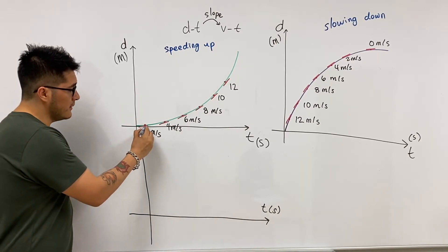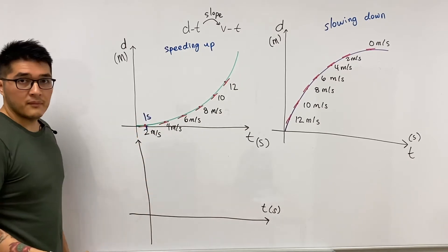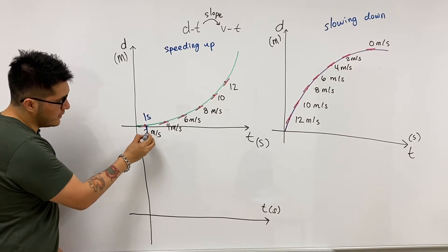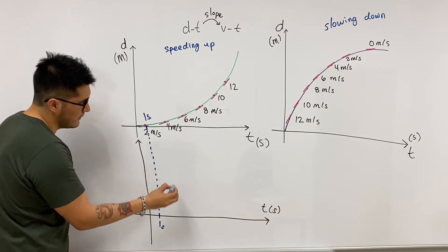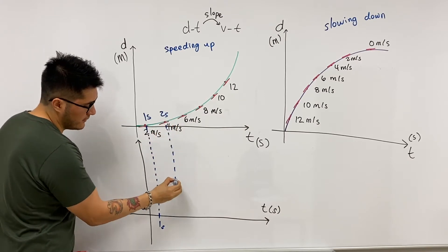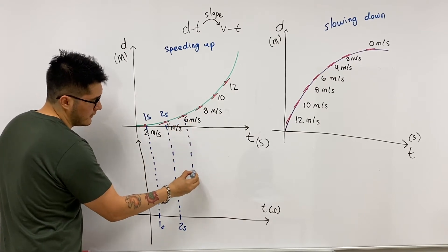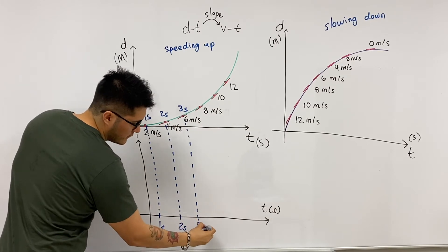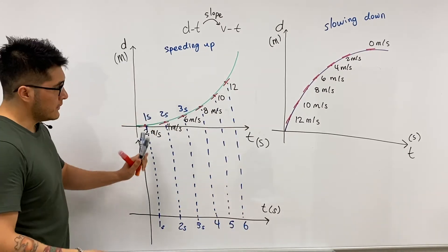We know that at this specific time, let's call it one second, what was the velocity of the object? 2 meters per second. So at the one second mark, this is going to line up nicely to one second. At the two second mark, this will line up two seconds. And so on, so I'm going to keep going for the rest of it.